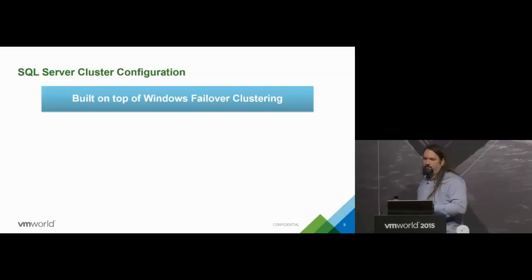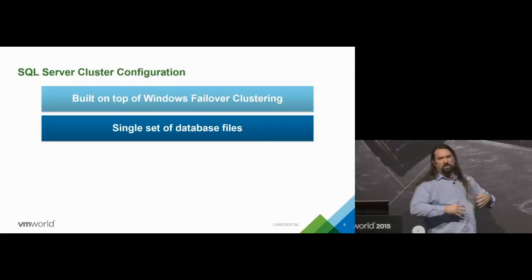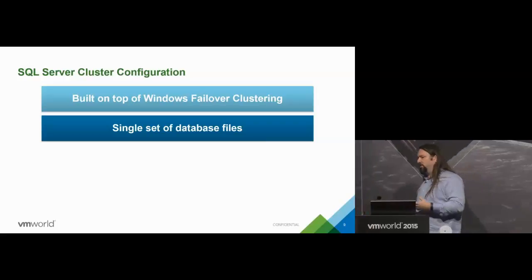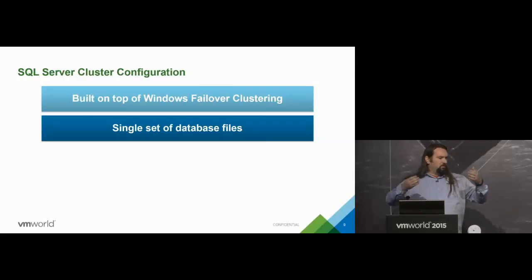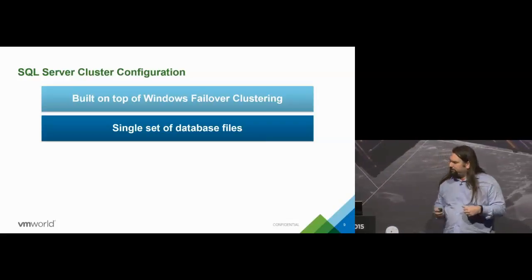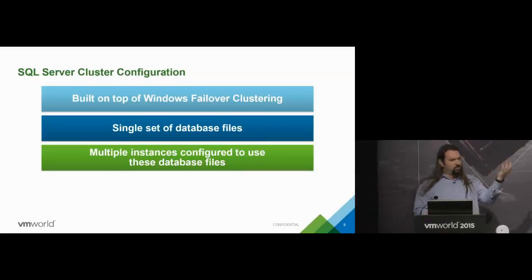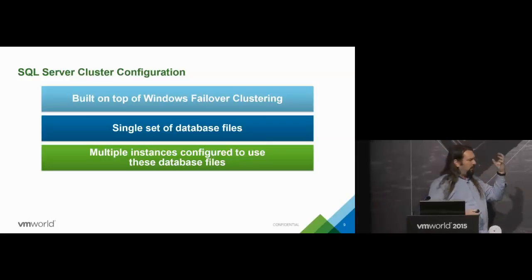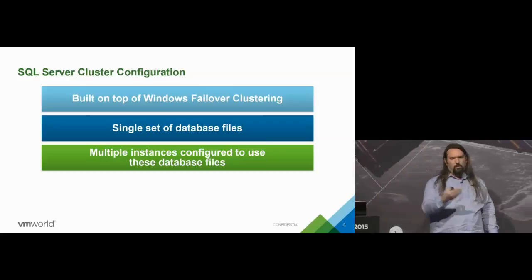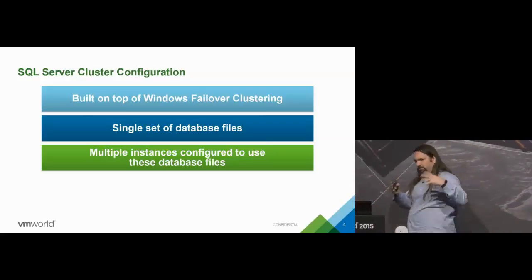With failover clustering, we have a single set of database files on shared storage presented to both VMs — much like you'd configure with a vSphere cluster where one set of LUNs is presented to all machines. In Windows failover clustering, you use an active-passive configuration where only one machine actually owns the disks at any one time. When we install the first node, we tell it to put data files on shared storage. When we install the second VM, we tell it to look at those disks when it's its turn to run the instance. When failover happens, ownership of those disks simply moves from one side to the other.